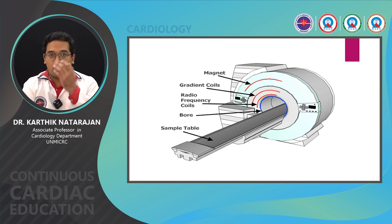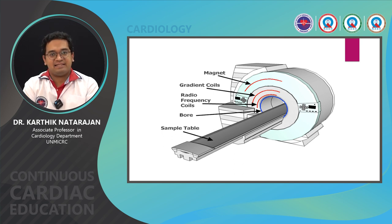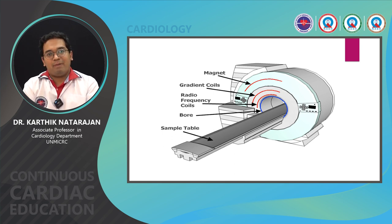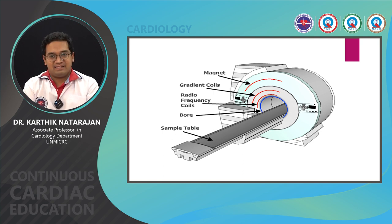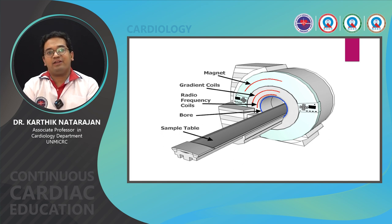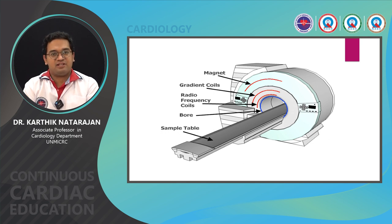The gradient coils are very important because they produce magnetic gradients along the three axes: the x-axis, y-axis, and z-axis. The z-axis is along the direction of the primary magnetic field, known as the B0 magnetic field, which is directed from the head to the foot of the patient. The gradient coils also provide gradients along the x and y-axes. Then you have radio frequency coils, which provide a radio frequency pulse transmitted to a receiver coil strapped to the chest of the patient.